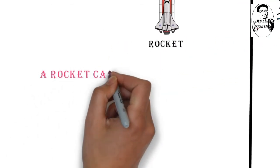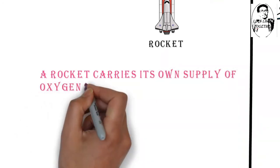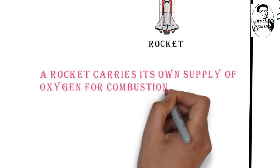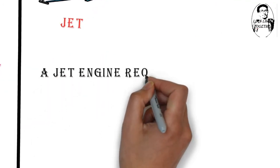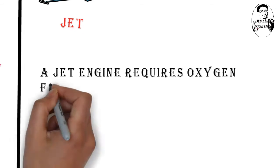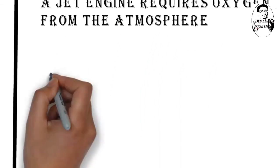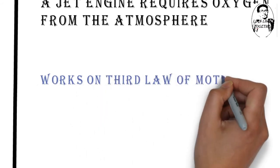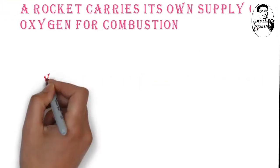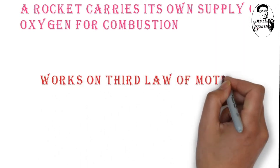The main difference between the two types of engine is that a rocket carries its own supply of oxygen for combustion. A jet engine requires oxygen from the atmosphere. Both engines work on the principle of Newton's third law.